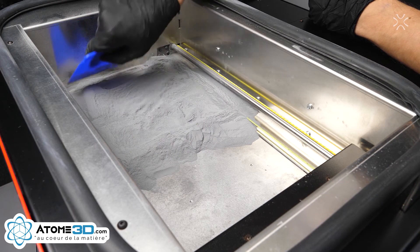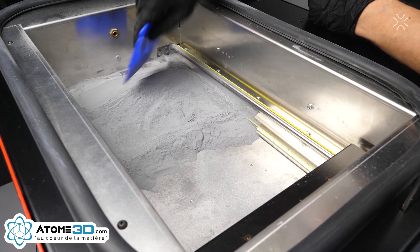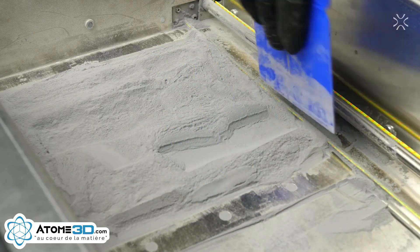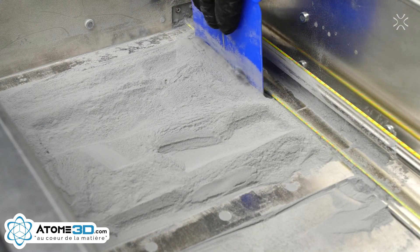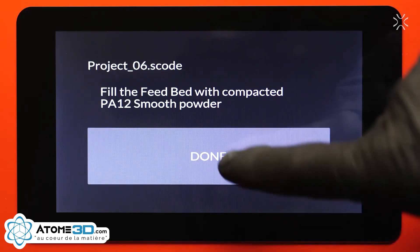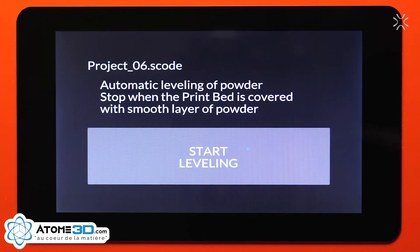Using one of the plastic scrapers, move the powder scattered in the print chamber into the feed bed. Press Done. Now you are ready for the next step.